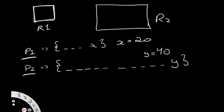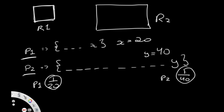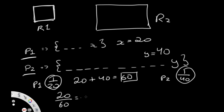For weighted probabilities, with x=20 and y=40, the total number of points is 20+40=60. The probability of selecting a point from P1 is 1/20, and from P2 is 1/40. The weight for P1 is 20/60 = 1/3, and for P2 it is 40/60 = 2/3. We give the smaller rectangle a lower probability of being chosen, and the bigger rectangle a higher probability.